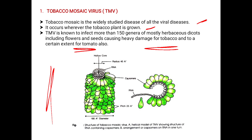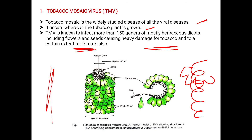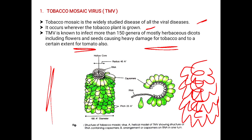The structure of TMV: it is a hollow cylinder where the capsomers are arranged. The hollow core has a radius of about 40 angstroms. The genetic material is RNA. The diameter of TMV is 180 angstroms.